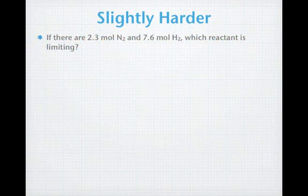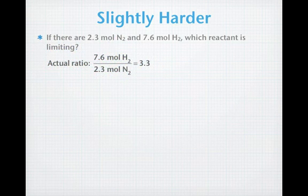Let's try a slightly harder problem, one in which we don't have integer numbers of moles to look at. Suppose we have 2.3 moles of nitrogen and 7.6 moles of hydrogen using the same reaction as before. So which one is the limiting reactant? Let's do our calculations.